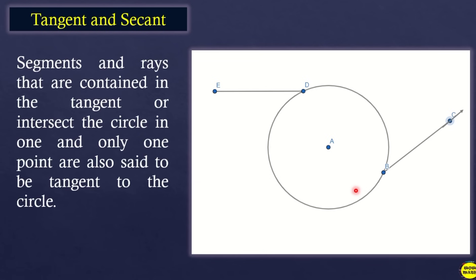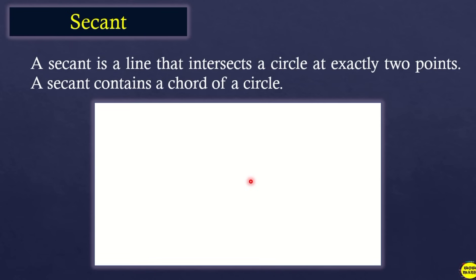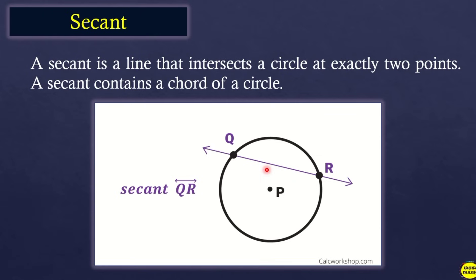Tangent and secant: segments or rays contained in a tangent or that intersect the circle in one and only one point are also said to be tangent to the circle. A secant is a line that intersects a circle at exactly two points. The difference between tangent and secant: a tangent intersects the circle at exactly one point, while a secant intersects at exactly two points. A secant contains a chord of a circle.